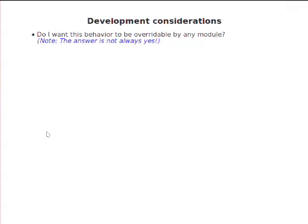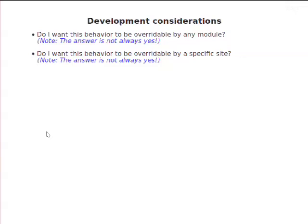When building a module, do you want this behavior to be overwritable by another module? Don't assume yes — that's modifiability. Do you want it overridable by a specific site? Different question, potentially on the theme layer. You're writing JavaScript that triggers a certain behavior, and that JavaScript depends on certain classes or IDs being present. Don't let your themers change those or they will break your code — not because themers are bad people, but there are certain things you do not want to be changeable because you are building assumptions around them.